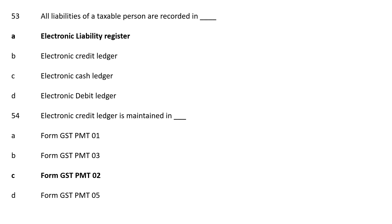MCQ No. 54. Electronic Credit Ledger is maintained in: Option A: Form GST PMT 01; Option B: Form GST PMT 03; Option C: Form GST PMT 02; Option D: Form GST PMT 05. The correct answer is Option C, Form GST PMT 02. Regarding GST forms, a related video has been made and the link will be given in the description box. Please refer to it as it will help you score marks on GST form-related MCQs. So, Electronic Credit Ledger is maintained in Form GST PMT 02.